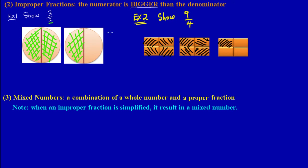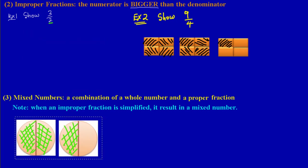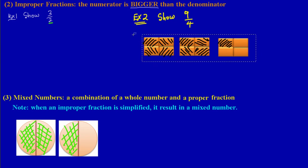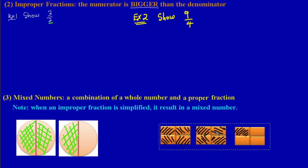When an improper fraction is simplified, it results in a mixed number. Let's use an example from our previous exercise. We had shaded three out of two on our diagrams — I'll take a copy of those diagrams to show the relationship between improper fractions and mixed numbers.